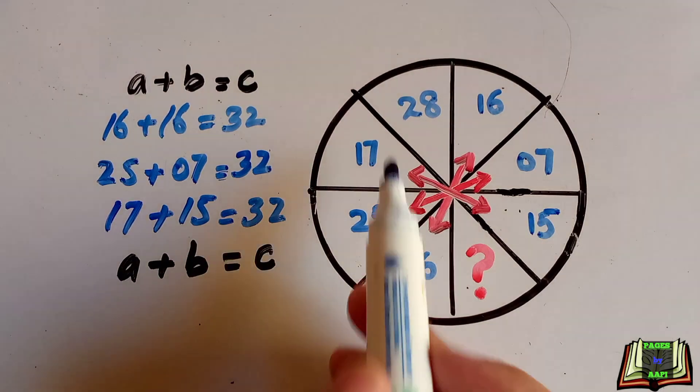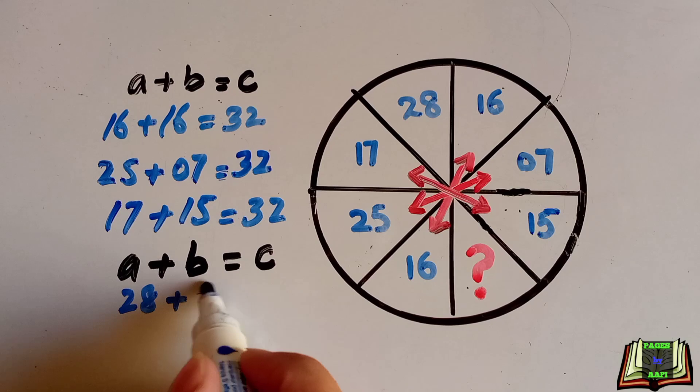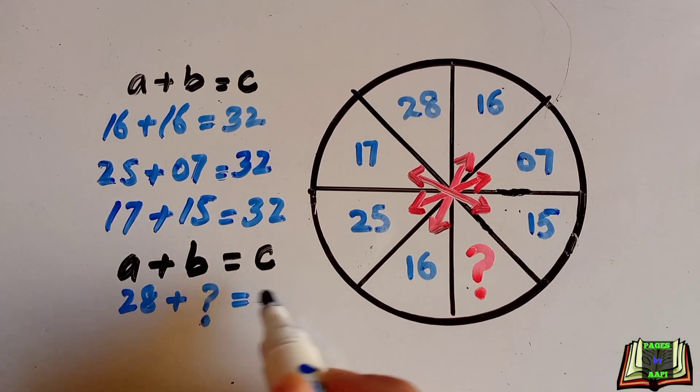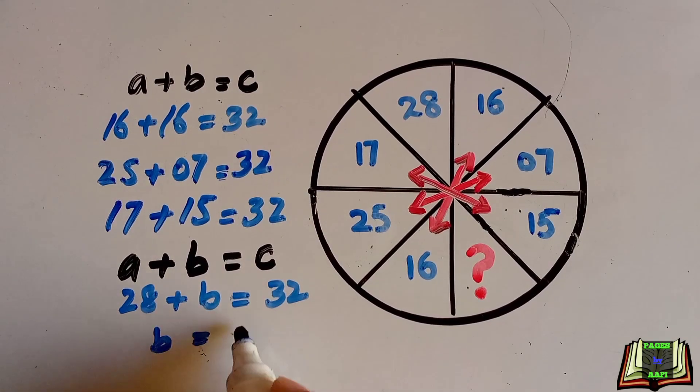Here a is 28 and b is not given, and c we already know that c is equal to 32. To find the value of b we will subtract 28 from 32.